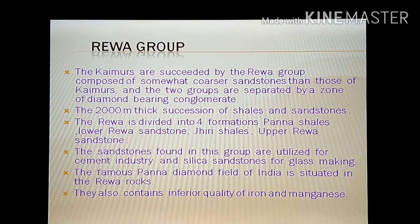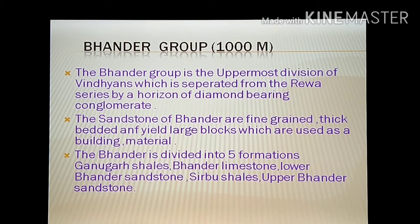The famous Panna diamond field of India is situated in the Rewa rocks. They also contain inferior quality iron and manganese deposits. The Rewa is succeeded by the Bhandir Group, the uppermost division of the Vindhyan, which is separated from the Rewa series by a horizon of diamond-bearing conglomerates. The sandstones of Bhandir are fine-grained, thick-bedded, and come in large blocks which are used as building material.